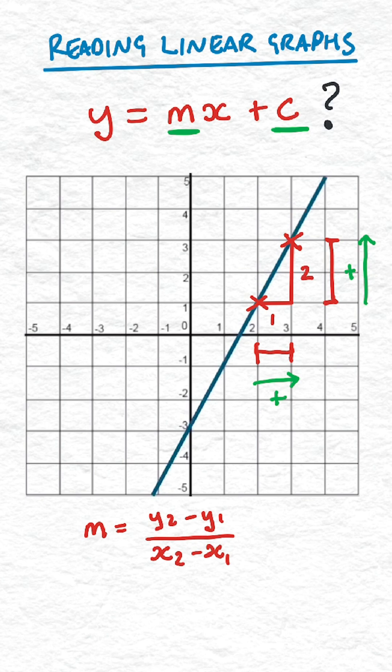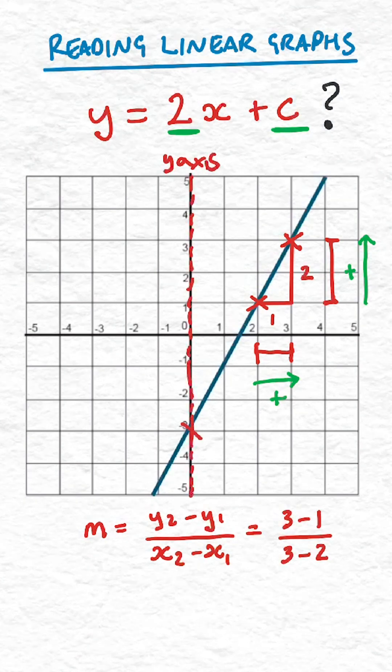The gradient is always the vertical change over the horizontal change, which would be 2. Looking at the y-axis, we see the line crosses at -3, so the equation is y = 2x - 3.